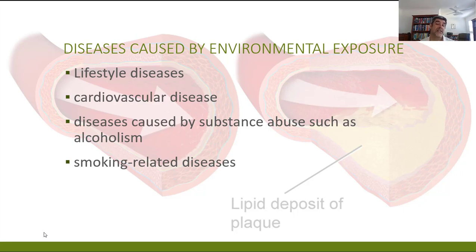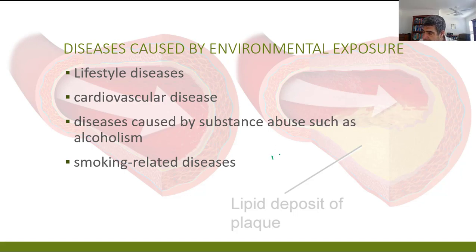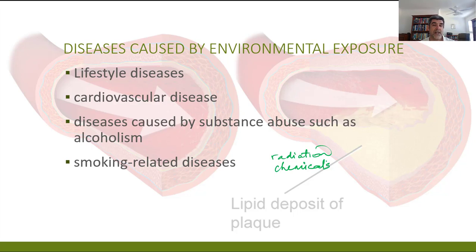Cardiovascular disease, diseases caused by abuse of substances such as alcohol or nicotine, and diseases related to exposure to ultraviolet radiation from the sun all fall into this category of environmental exposure. They can be types of radiation or certain types of chemicals, and there are a range of different sources of each of these agents that can create diseases or disorders within the body.